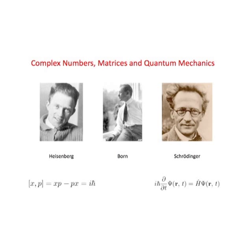Heisenberg was unaware of that, but once it was understood, it became absolutely obvious that matrices are absolutely quintessentially essential to the description of the real world if you want to describe quantum mechanics. If you want to know what goes on inside atoms, how the electrons move inside atoms, or what goes on inside the nuclei of atoms, you absolutely need matrices.